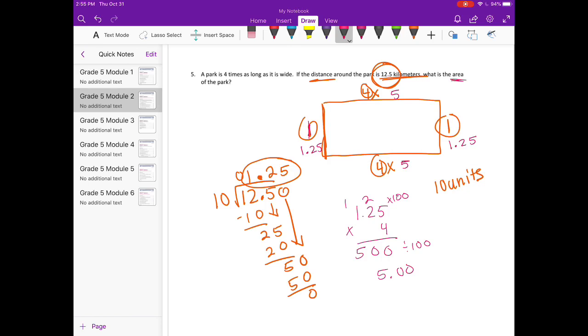What is the area? So area, we would do 5 times 1 and 25 hundredths units. 5 times 5 is 25. Carry the 2. 5 times 2 is 10 plus 2 is 12. 5 times 1 is 5 plus 1 is 6. And we need to divide that by 100. We'll get 6 and 25 hundredths. And we're talking area, so it would be kilometers squared.